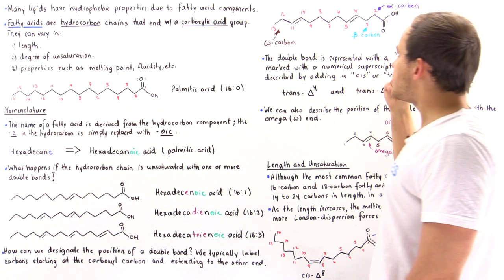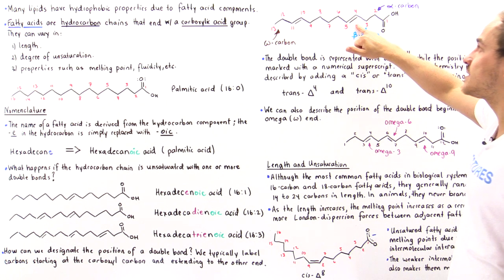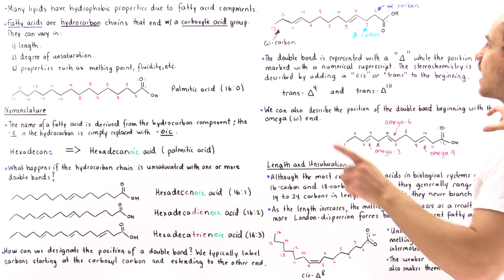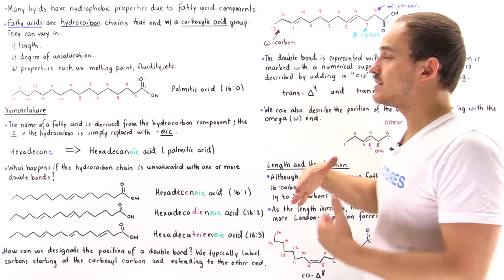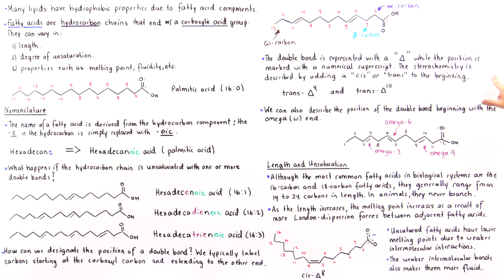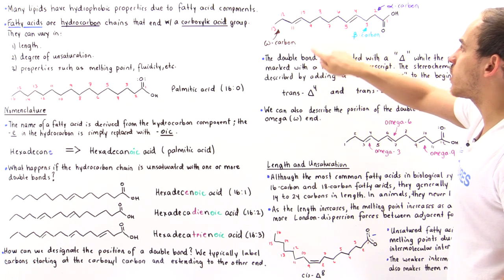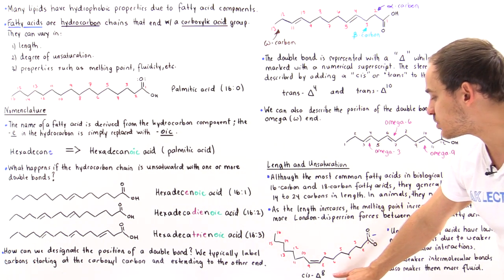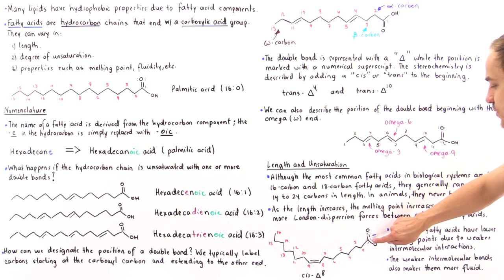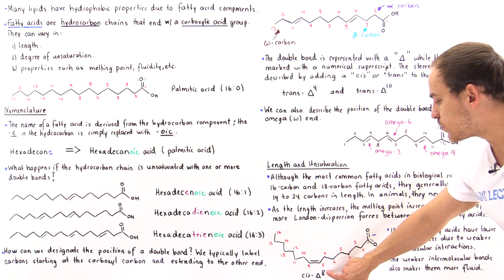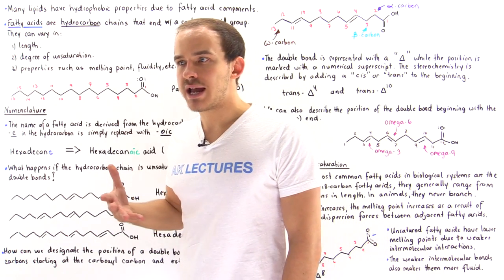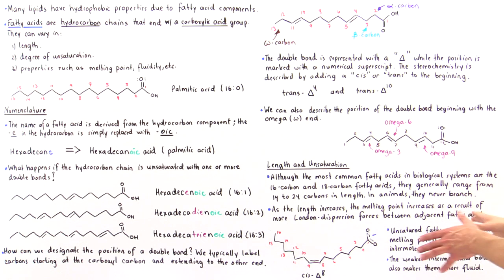We also describe the stereochemistry of the double bond. A trans double bond means the two groups point to opposite sides — for example, trans-delta-4 or trans-delta-10. Cis means the groups point to the same side — for example, cis-delta-8, where the double bond is between carbons 8 and 9. Cis double bonds are more common inside the body, and as we'll see, they are also the healthier configuration.